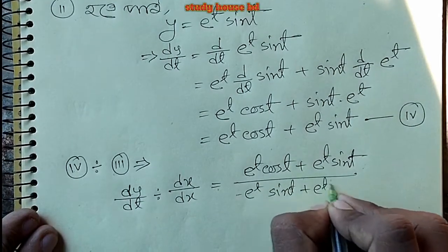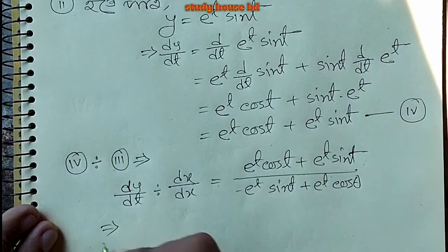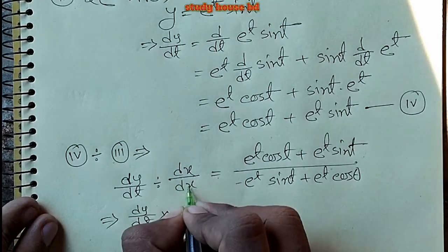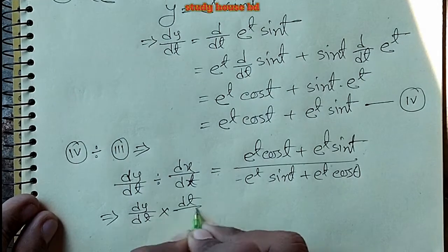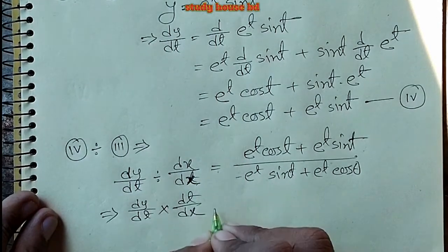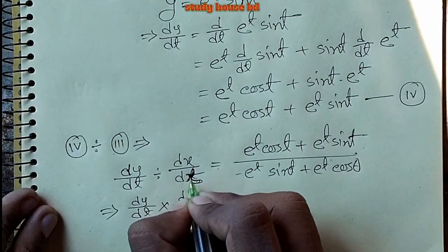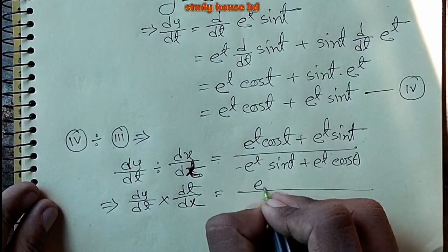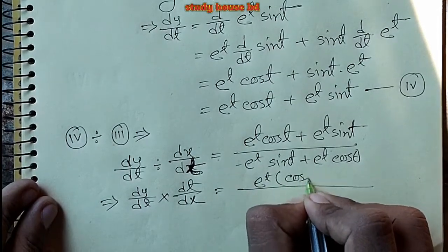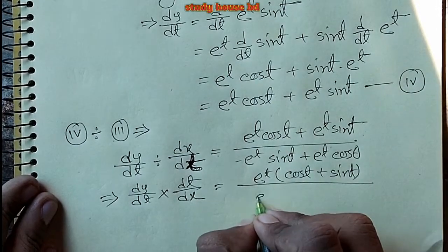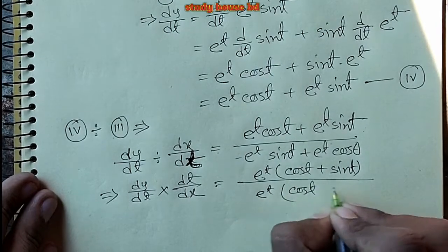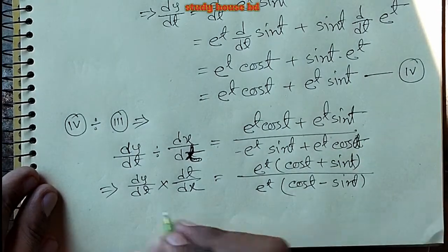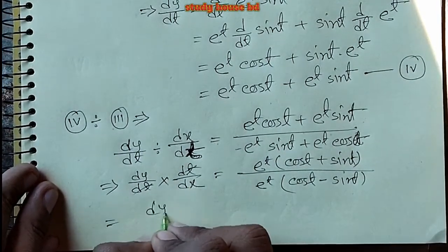For dy/dx: dy/dt gives e^t sin t plus e^t cos t. And dx/dt equals e^t(cos t minus sin t). So dy/dx equals (cos t plus sin t) over (cos t minus sin t).